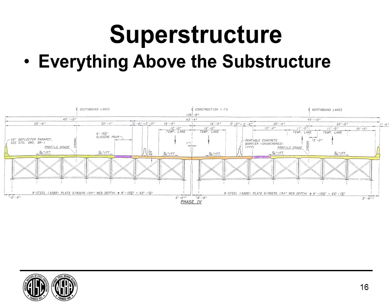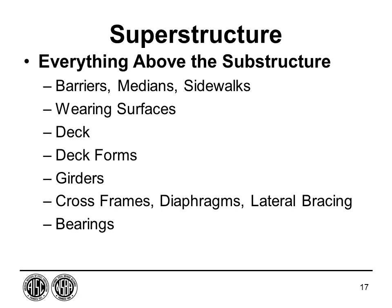The superstructure is everything above the substructure. Its main function is to provide a riding surface for traffic loads and carry those loads across a span to the supports, which are the substructure elements. Superstructure elements include barrier, median, sidewalk, deck, wearing surface, deck forms, girders, cross frames, diaphragms, lateral bracing, and bearings. In bridge inspections, the deck is treated as its own entity separate from the rest of the superstructure.